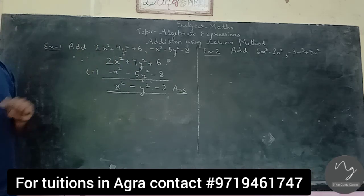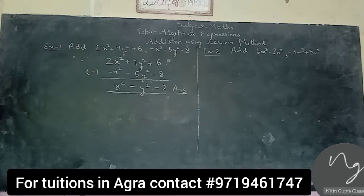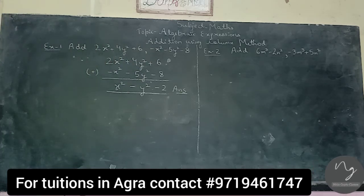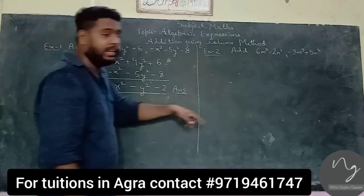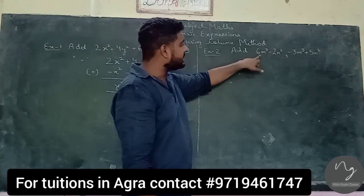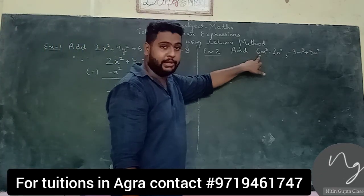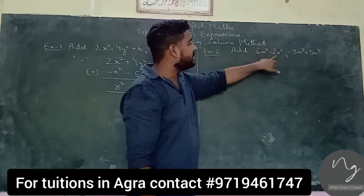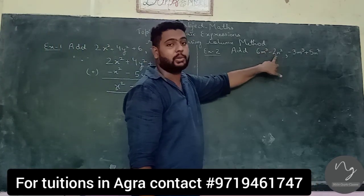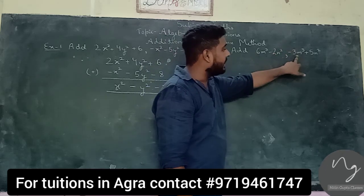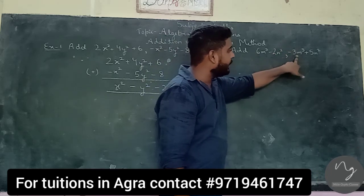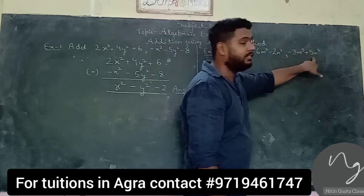We will now solve the second example. We have written 6nq minus 2n squared. We will add minus 3nq plus 5n squared.